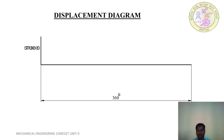At scale 1:2, 360 degrees becomes 18 centimeters on the horizontal line. Draw a vertical line at the end of the horizontal line. The vertical line represents the stroke or lift, which is 30 mm.